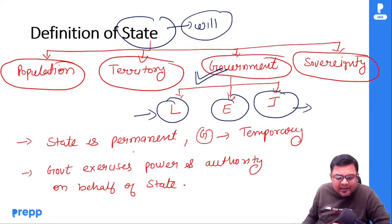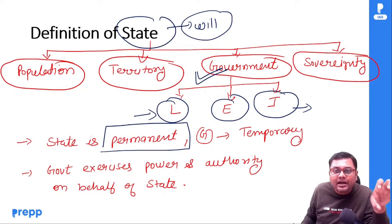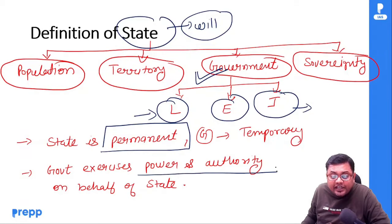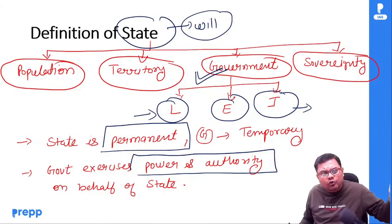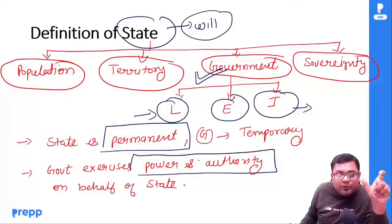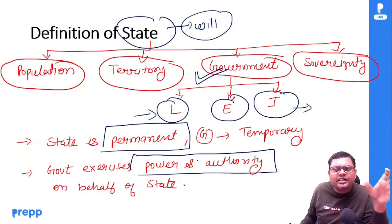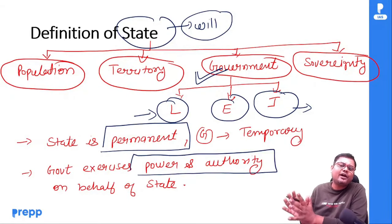State is permanent but government is not — because elections होंगे, आएगी जाएगी, so government is temporary। Government exercises power and authority on behalf of state — state की will को implement करना है government का function: law बना के, उस law को implement करके, and in case of any dispute उसको resolve करके। So government is basically an agency of the state। State एक political association होता है — यह concept clear होना चाहिए।